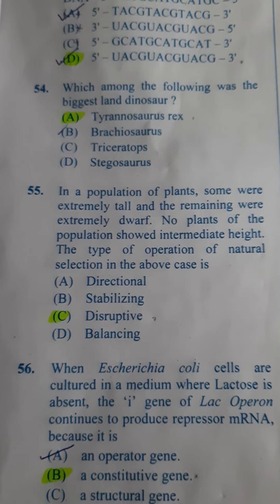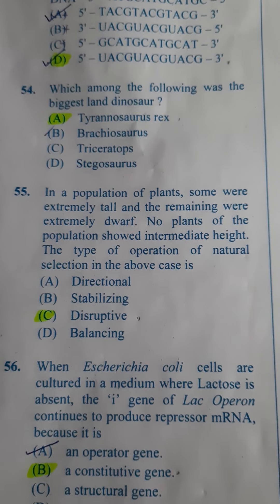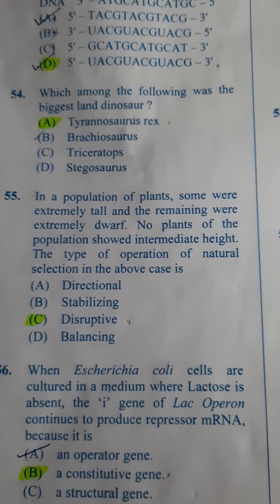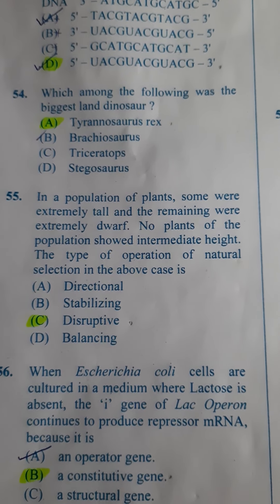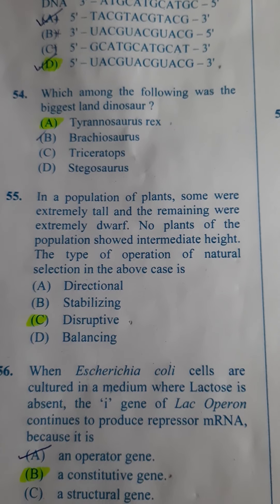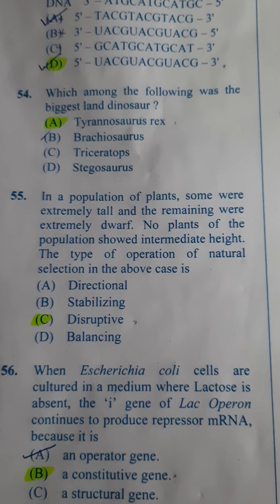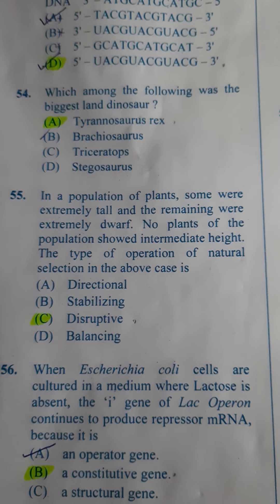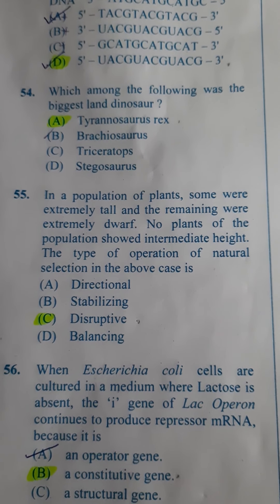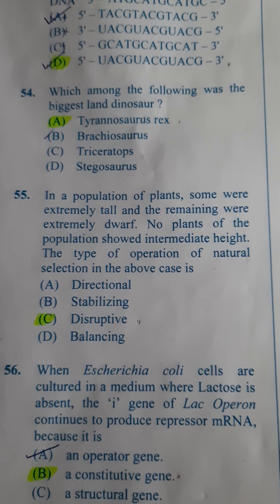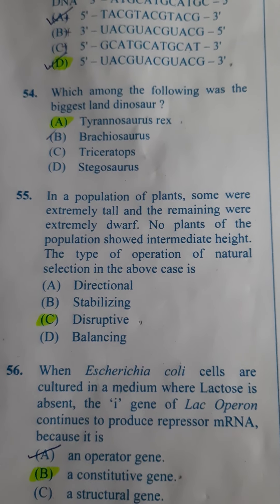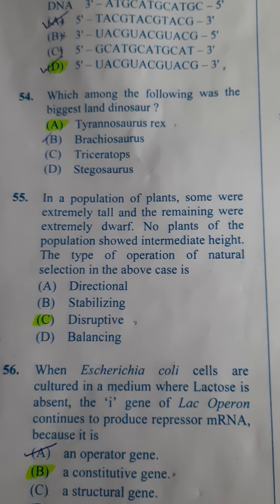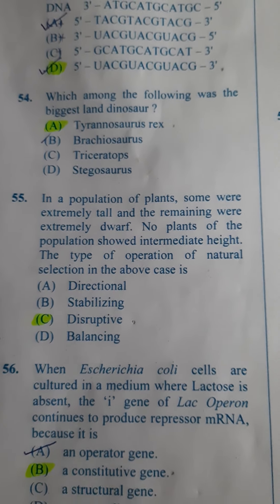Next question: In a population of plants, some were extremely tall and the remaining were extremely dwarf — no plant showed intermediate height. The type of natural selection in the above case is — in the evolution chapter it is given that if in a population you have two extreme organisms, it is called disruptive. So the answer here is C.